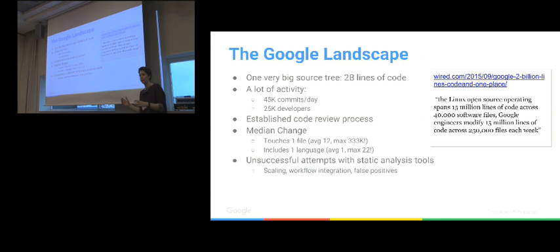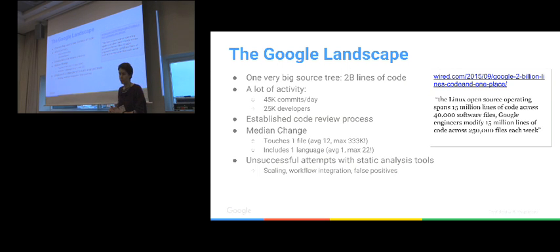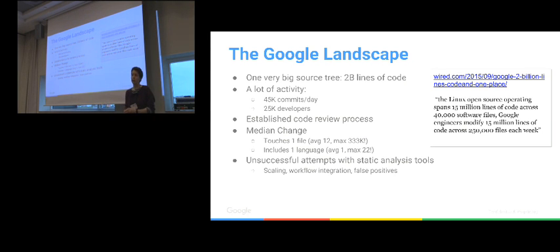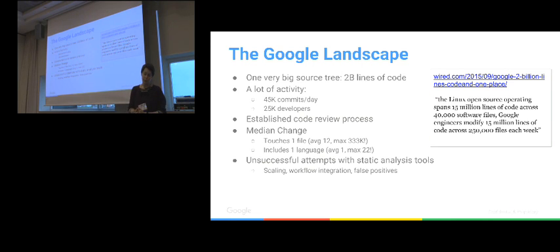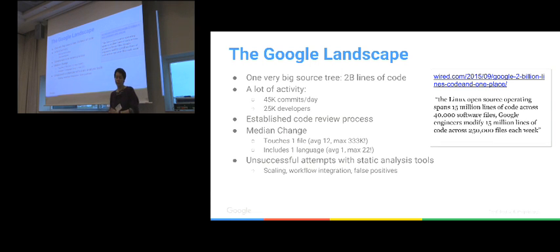We have different landscapes here. Internally at Google, the codebase is 2 billion lines of code — there's an article in Wired about this. There's about 45,000 commits per day and around 25,000 developers. Changes tend to be small, but there are extremes — you can touch 22 different languages in the same change, or 333,000 files in one change. That doesn't sound like a human — and yes, robots are also changing the codebase.